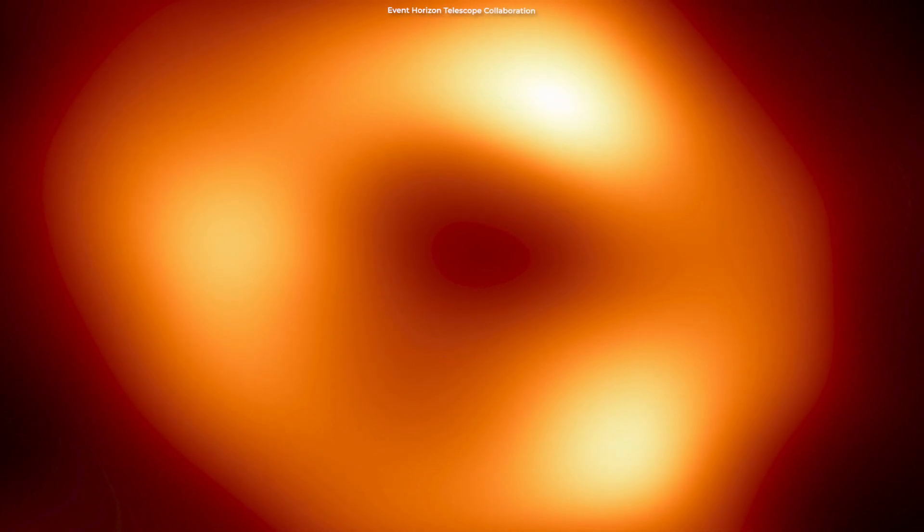Some of the gas visible in the image is actually behind Sagittarius A. Light from that gas is being bent by the powerful gravity of the black hole toward Earth. This effect, called gravitational lensing, is a core prediction of general relativity.